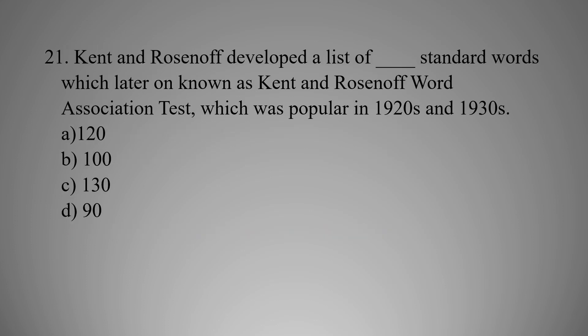MCQ number twenty-one: Kent and Rosanoff developed a list of standard words which became known as the Kent-Rosanoff Word Association Test, popular in the 1920s and 1930s. How many standard words? Option A: 120, Option B: 100, Option C: 130, Option D: 90. The right option is B — 100 words.